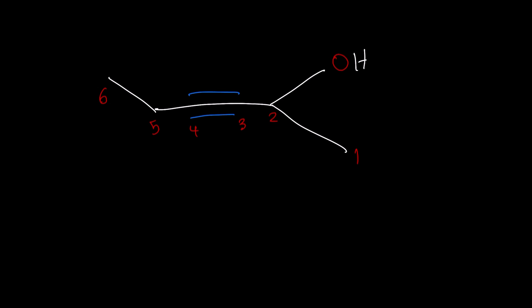And even if we started from here and went to the right, we would still have the same number of carbons across the triple bond. Since we have six carbons, this is going to be called hexyne.